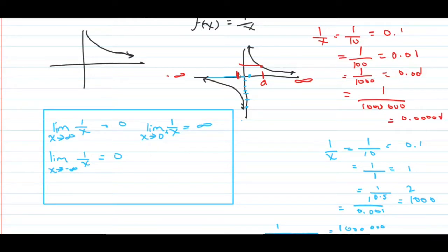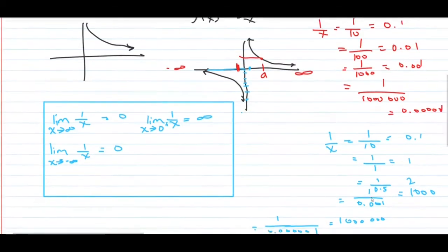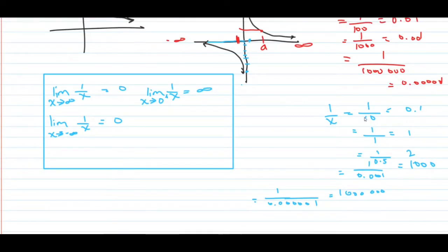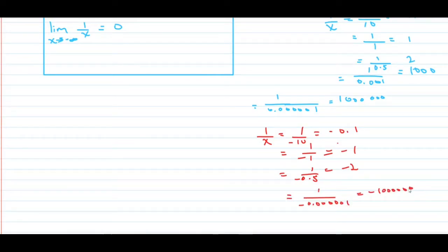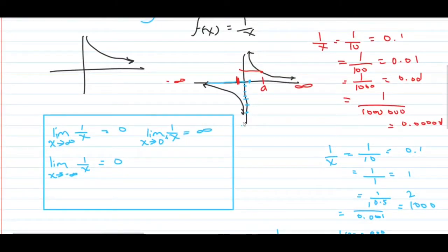As we get closer and closer to zero from the left, we use the same magnitude of values but they are negative, so the results are negative. The values are getting larger and larger in the negative direction, and looking at the graph we can see this is approaching negative infinity. So the limit of 1 over x as x approaches 0 from the left is equal to negative infinity.